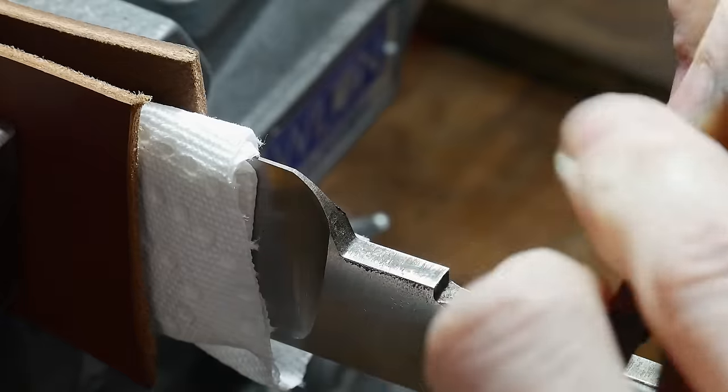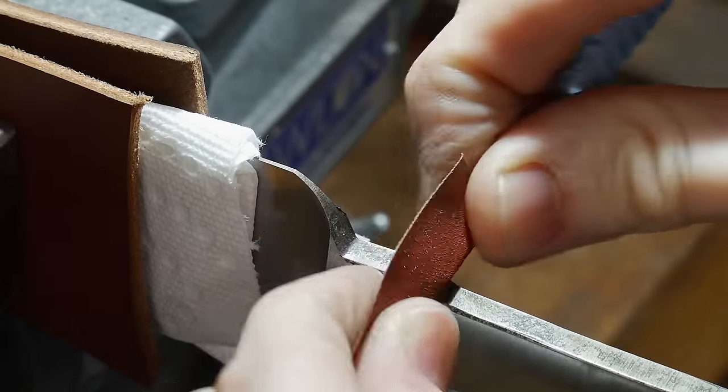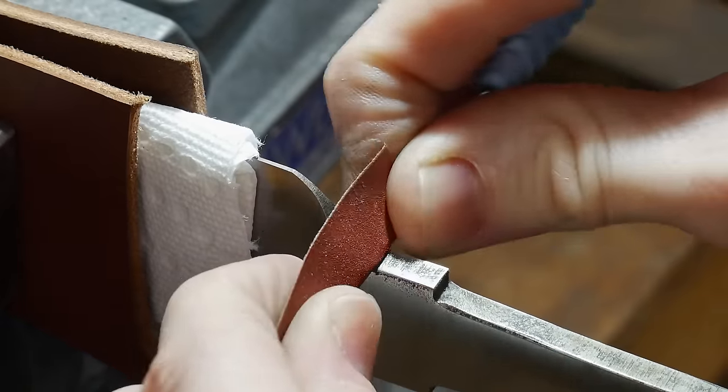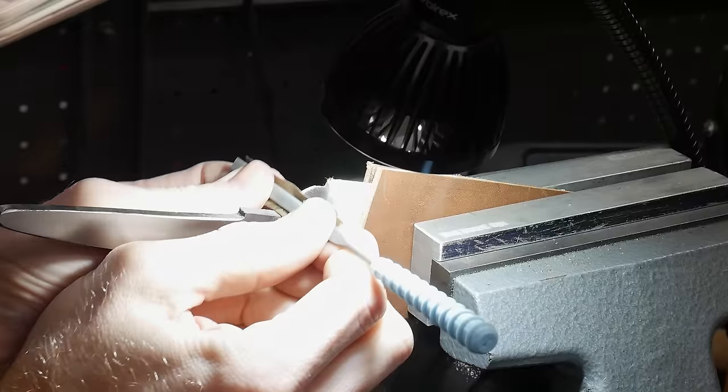This felt like a good time to do some cleanup on the bottom of my ricasso so I brought these flats up to 600 with some sandpaper wrapped around a small needle file.